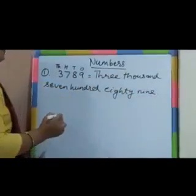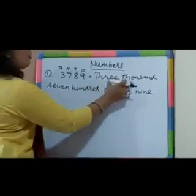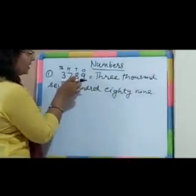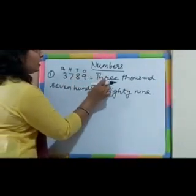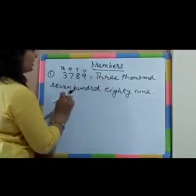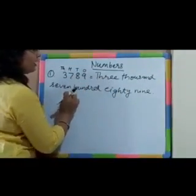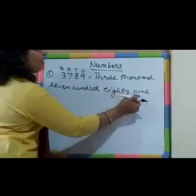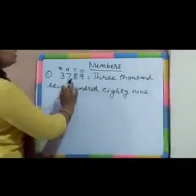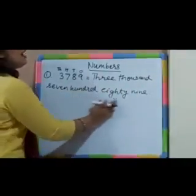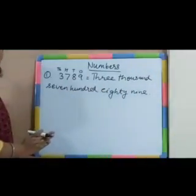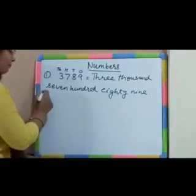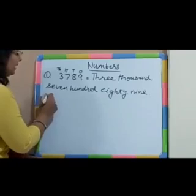So, the word form of this number 3789 is three thousand seven hundred and eighty-nine. This is how you have to write a number in word form. Second example.